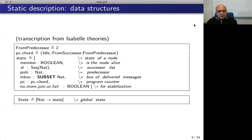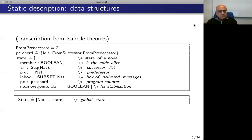First, we present the model of the state of each node. We consider that each node has a first field, that is 'member', that is a boolean representing the fact that the node is alive or not. Then we have the successor lists — this is the view of the node of the other nodes, starting from its supposed successor. Then we have the field PRDC, which is the supposed predecessor of the node. Then we have the inbox set for the delivered messages. Then we have a program counter, which takes its values in an enumeration with three values. And last, for stabilization, we have a 'no more join or fail' boolean for expressing that we have reached the start of stabilization.